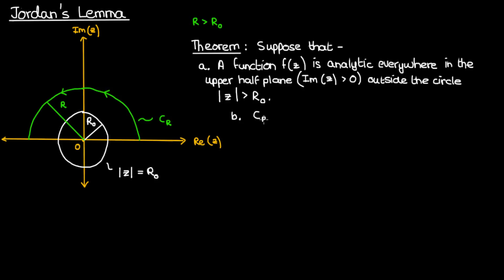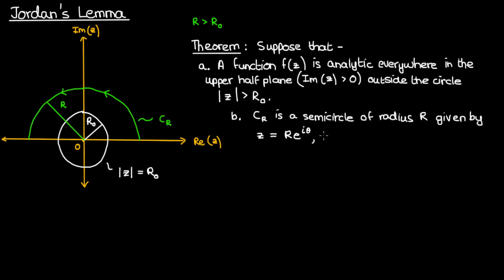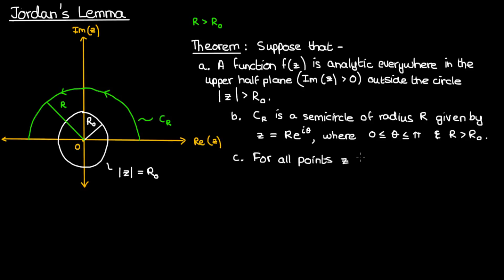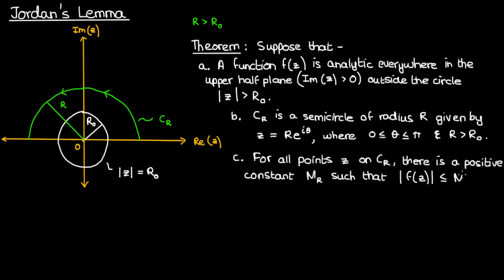Suppose also that C sub R is a semicircle of radius capital R whose equation is given by z equals capital R times the exponential of iθ, where θ lies between 0 and π, and capital R is greater than capital R₀. Finally we'll suppose that for all points on the semicircle C_R the function f has an upper limit of M sub capital R that approaches 0 as the radius of the semicircle approaches infinity.